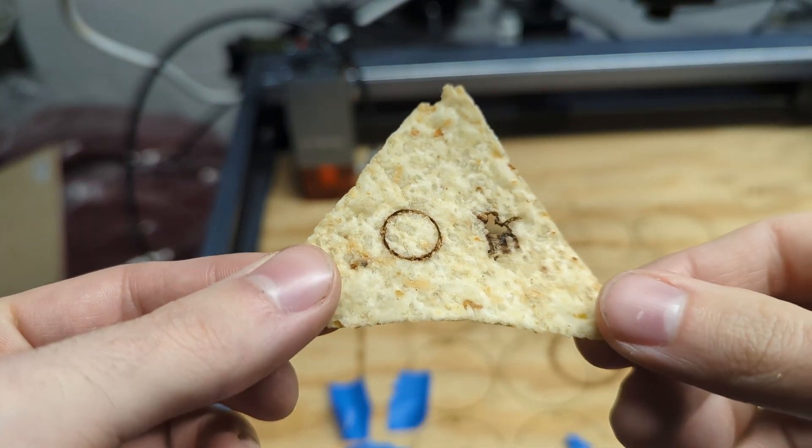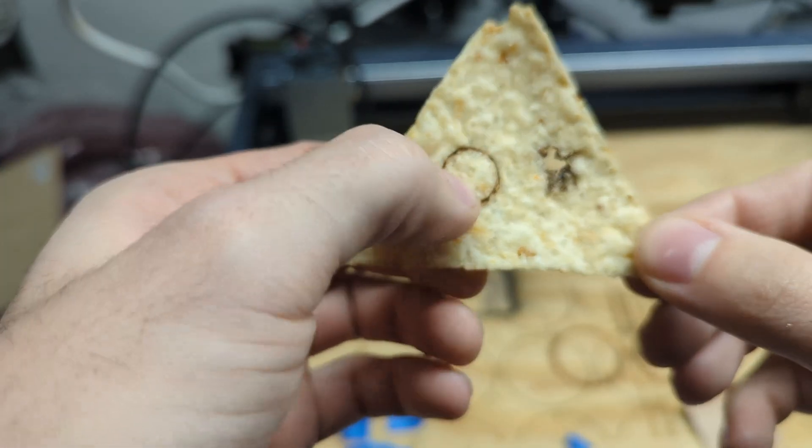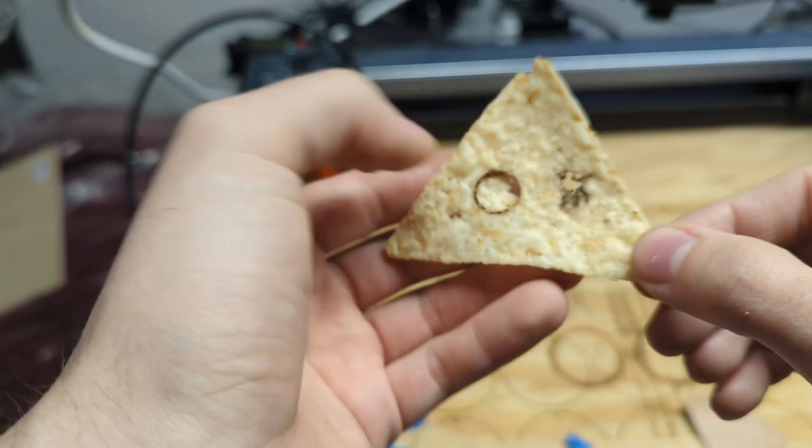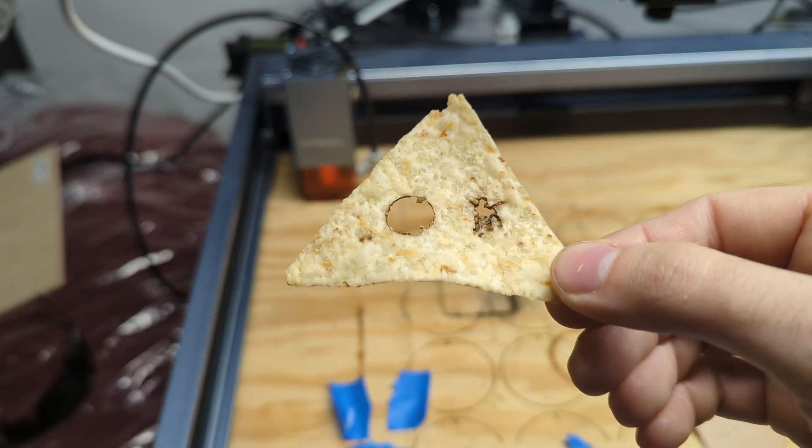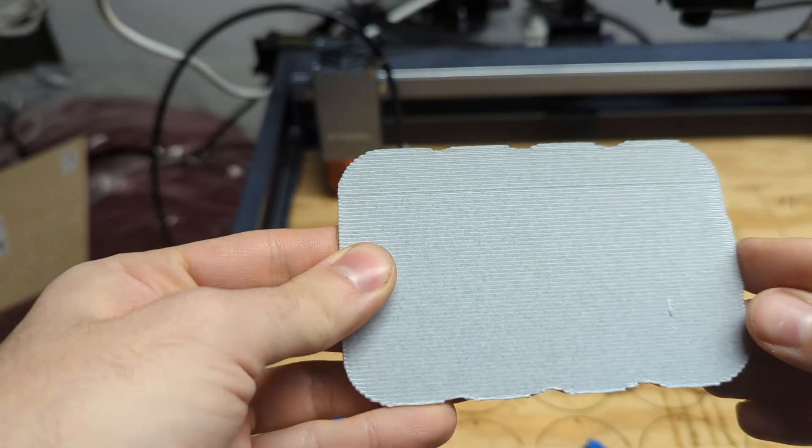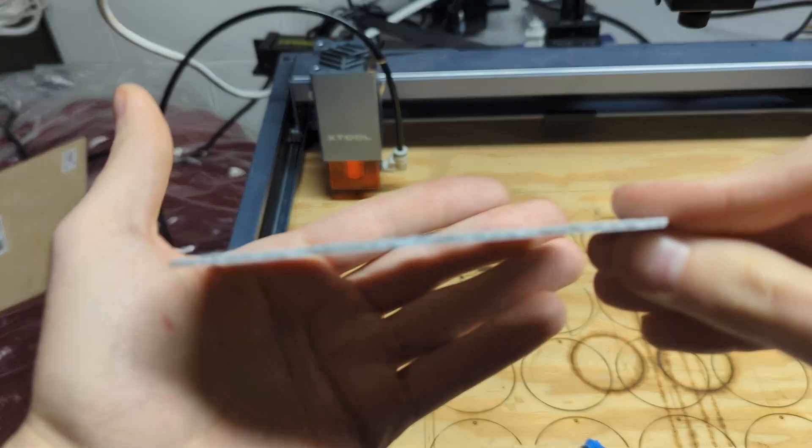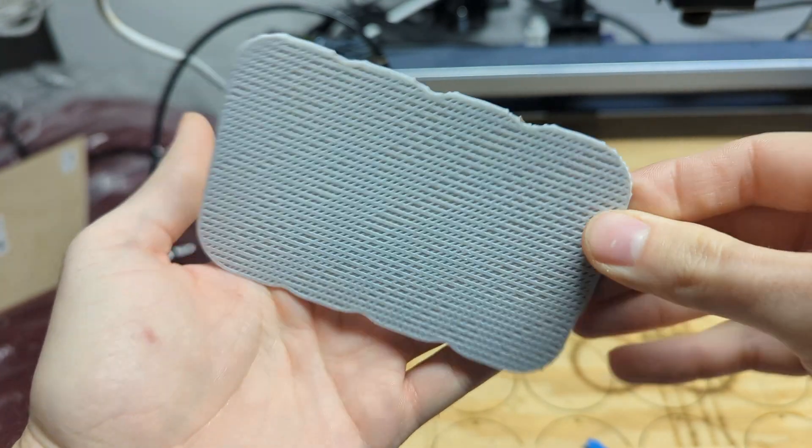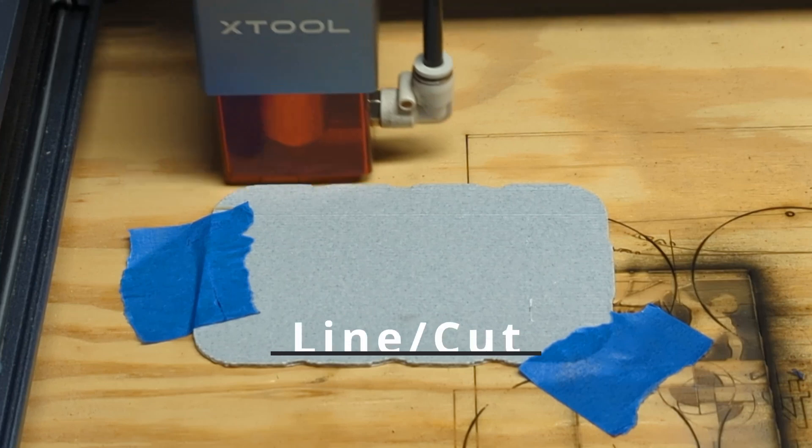You can tell that the engrave kind of burnt through and it's not very defined. I think that's due to the lack of focus, but the cut with a little bit of finagling pops right out. Next up, some leftover 3D printing material. This is a PLA raft from another project I did. It's 2mm thick, 1.7 to be exact, and we're going to go with the smooth side.